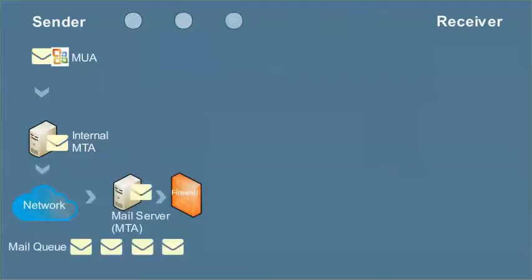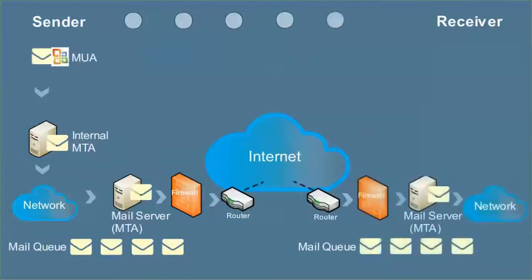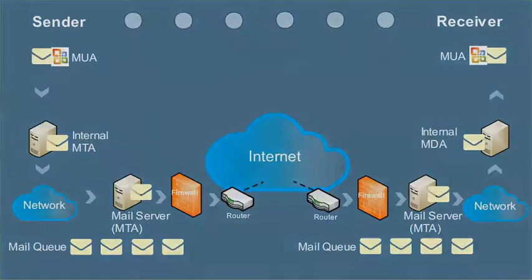Next, the internal MTA transfers your email to your mail server, which is also an MTA. Your mail server then transfers your message via the Internet to the receiver's mail server. The receiver's mail server transfers your message to the receiver's MDA for delivery to the receiver. And finally, the receiver receives the message in their MUA.